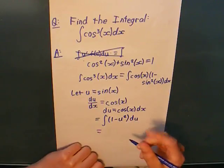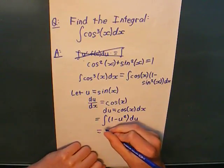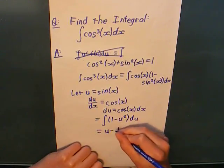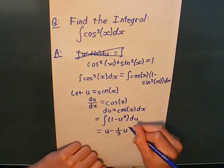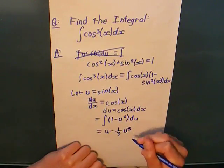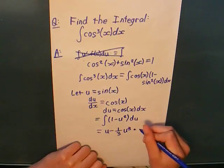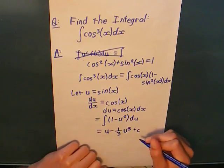This equals u - 1/3 u³ plus c. Also, it's going to be a plus c, where c is an arbitrary constant.